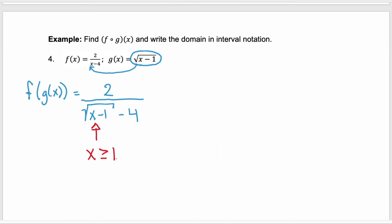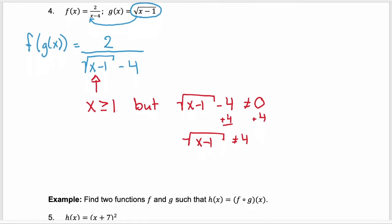So we know because of g of x, x has to be greater than or equal to 1. But we also know that that denominator x minus 1 minus 4 cannot equal 0. We can add 4 to both sides. The square root of x minus 1 cannot equal 4. If we square both sides, we have x minus 1 cannot equal 16.